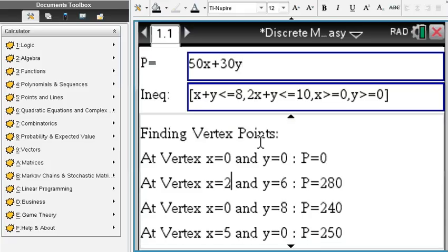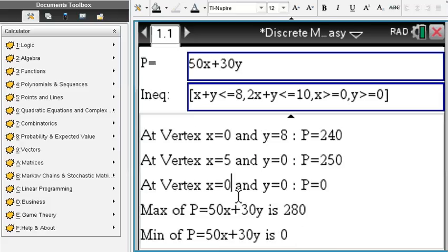We're going to check out all the vertex points—0, 0—and evaluate the profit function. Well, that would turn out to be 0 if both x and y are 0. Plug in 2 and 6, etc., until we find the maximum, which in our case turns out to be 280. Minimum would be 0.